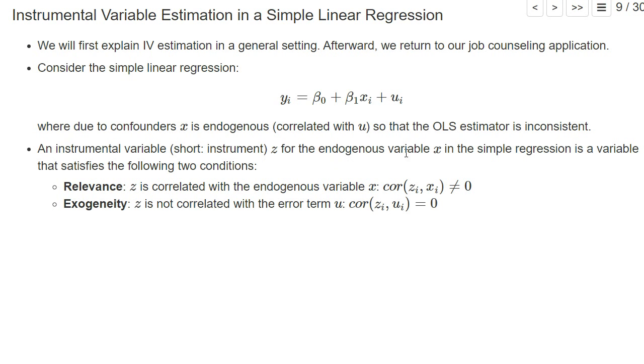In such a setting, we say an instrumental variable, or short an instrument z, for the endogenous variable x is a variable that satisfies the following two conditions. The first condition is called the relevance condition. z shall be correlated with the endogenous variable, so the correlation between z and x shall be unequal to zero. It can be positive or negative, but it should be unequal to zero, and it should ideally not be super small, so the absolute value should be substantial.